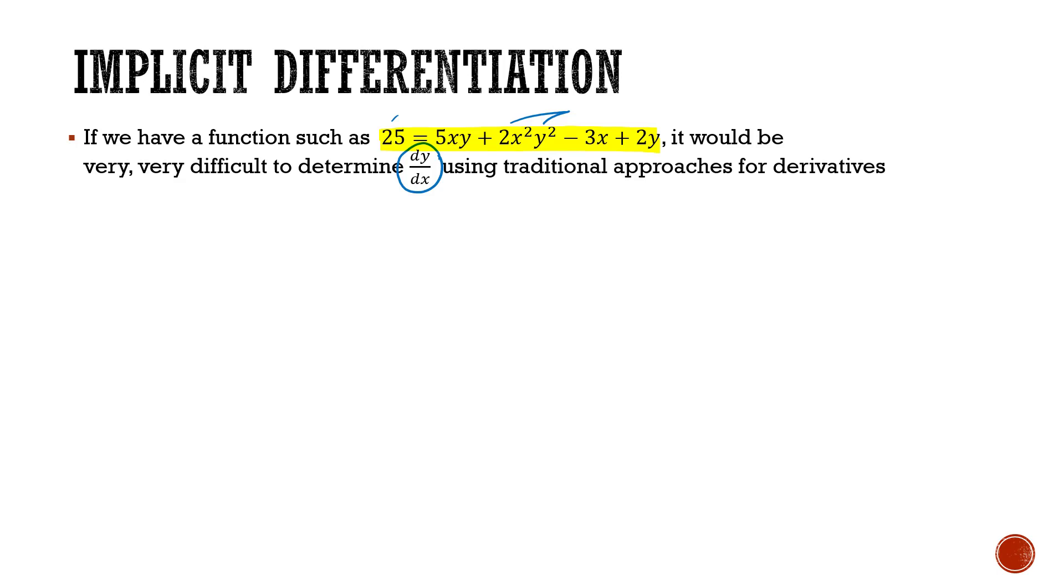If we wanted to do this using our traditional approaches, we would have to define y as a function of x. But looking at how many combinations of x's and y's there are in this function, that would be insanely difficult to define y as a function of x. Instead we're going to leave behind the traditional approach of defining y as a function of x first and then doing the derivative. And we're going to differentiate this function using implicit differentiation, a new technique.